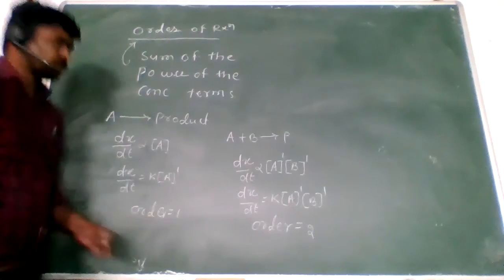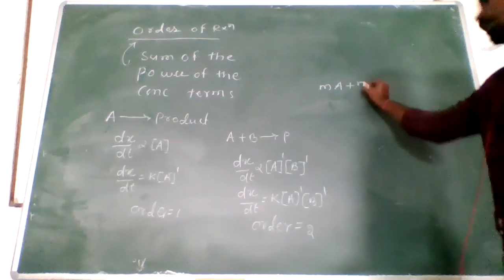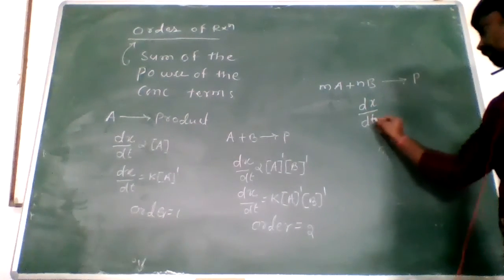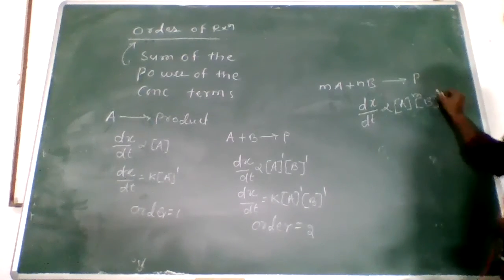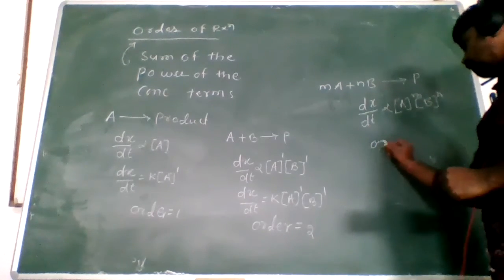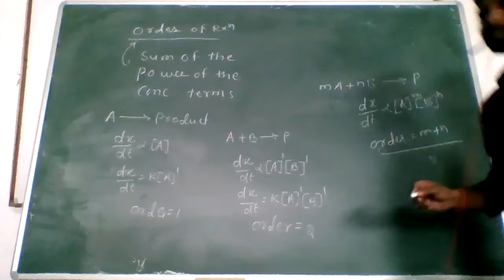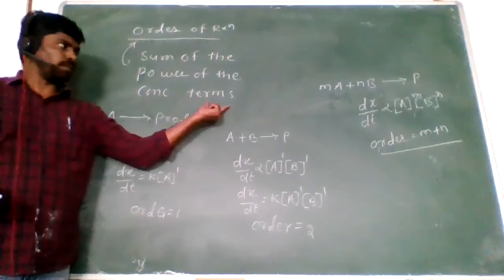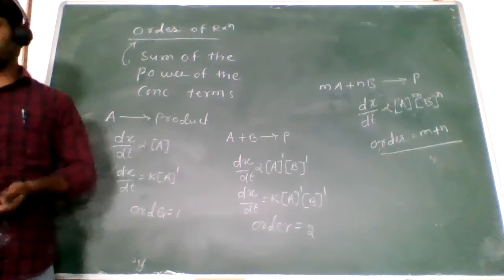Now look at here. M is the concentration power of A, N is the concentration power of B, for the formation of product. The rate of reaction dx/dt is directly proportional to A power M into B power N. So what is the order of reaction? Order of reaction is M plus N — the sum of the powers of the reactant concentration terms.